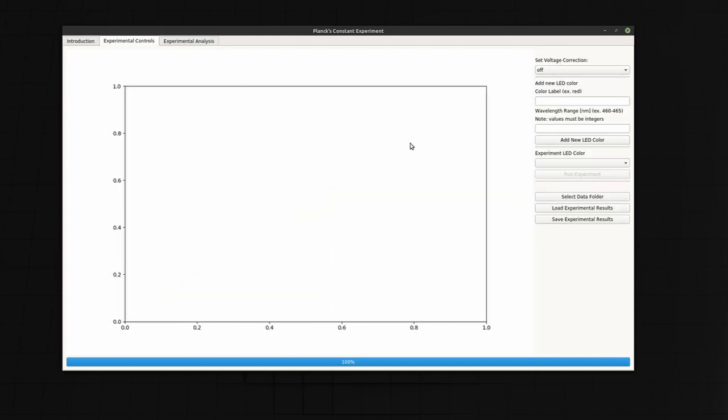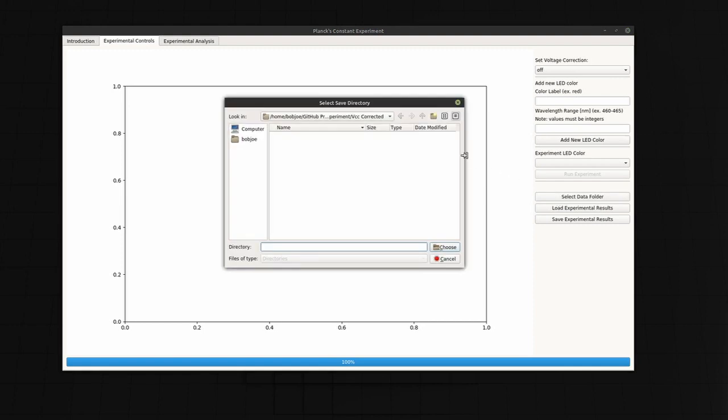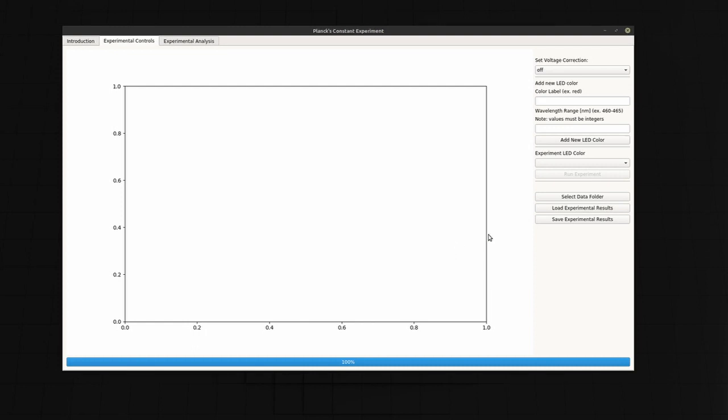If you don't have the required equipment, like a digital to analog converter, you can still see how the analysis works by using the saved data provided. I used the VCC corrected data set here. You can try the VCC uncorrected data set to see different results.